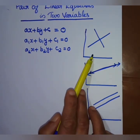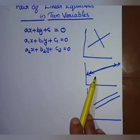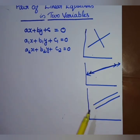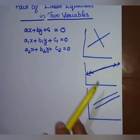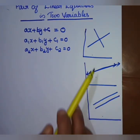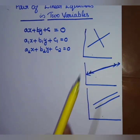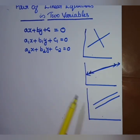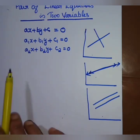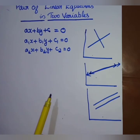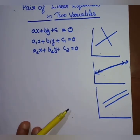The three cases are: first one intersecting, second one coincident, third one parallel. If we choose any type of graph, we use coefficients — x's coefficient, y's coefficient, and the constant — in the equation a1x + b1y + c1 = 0.